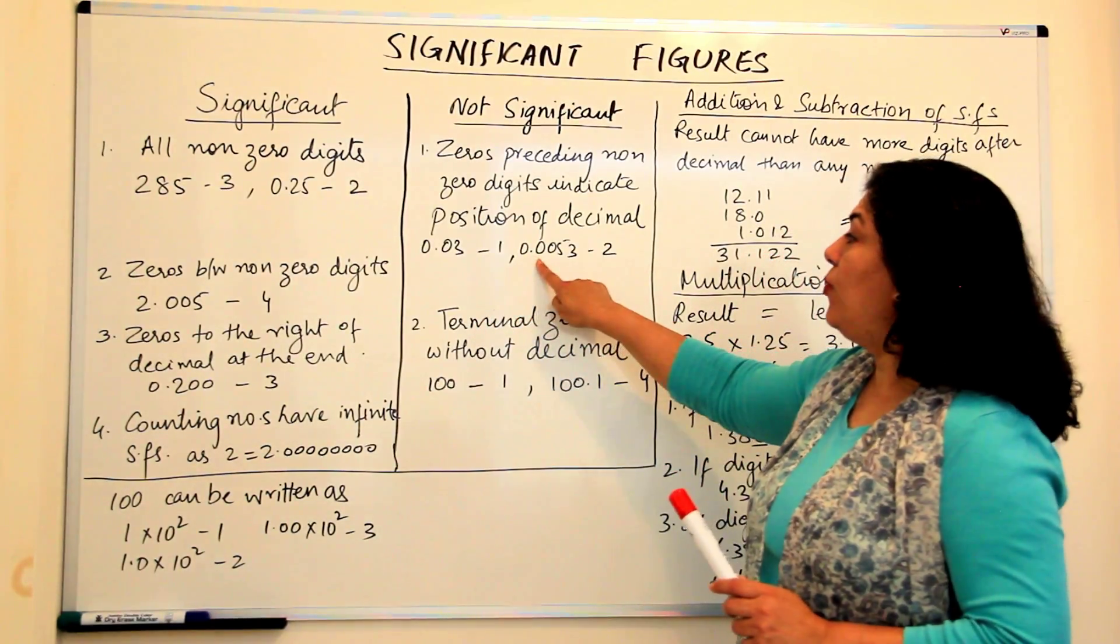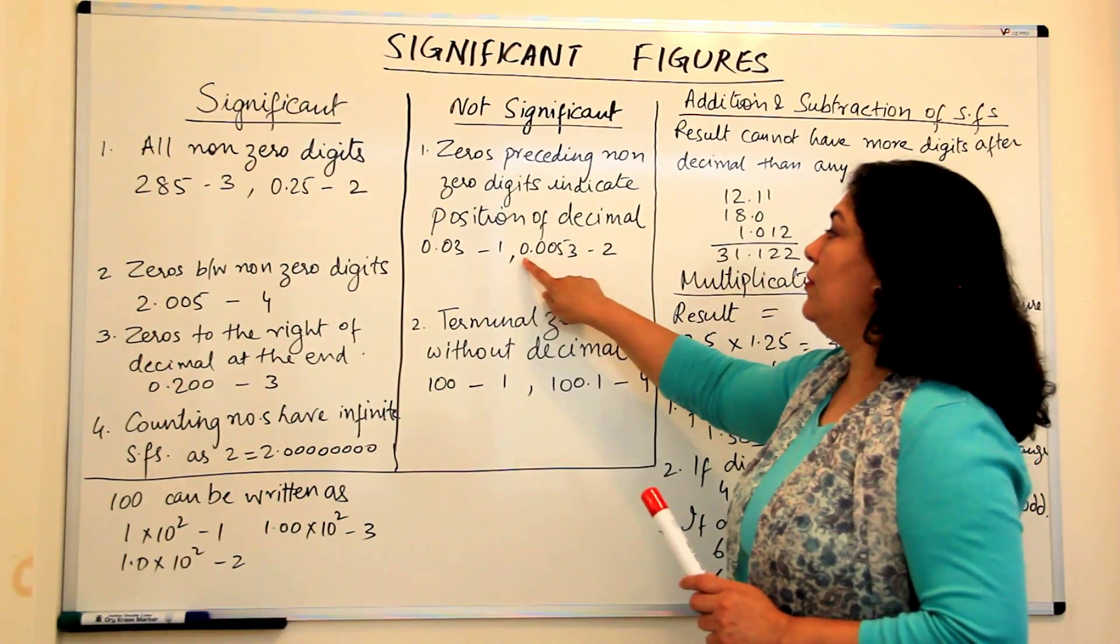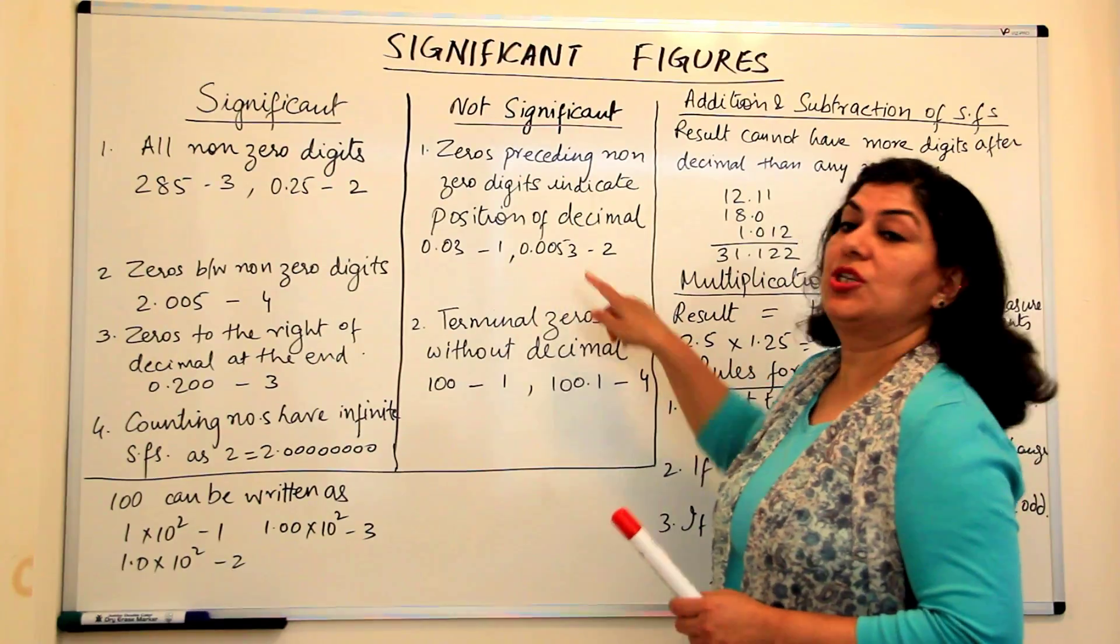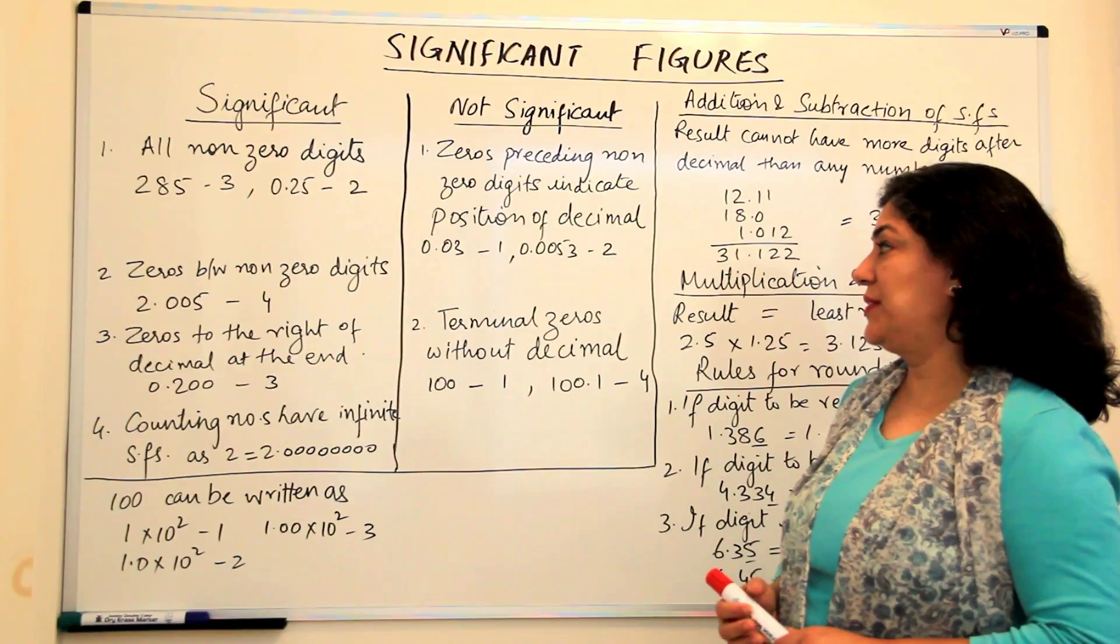Similarly, this one has 0.0053. The three zeros are non-significant. Only the non-zero digits here are significant and therefore it has only two significant figures.